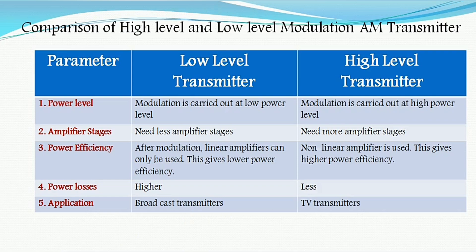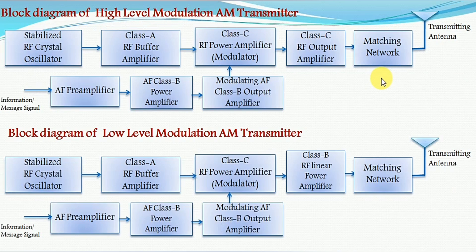In the block diagram, a matching network is used. At the output of the power amplifier, we have either a high power or low power modulated signal. The matching network is needed in order to transfer maximum power to the transmitting antenna. This matching network uses a tank circuit, and the quality factor must be kept low enough to pass all sideband signals without amplitude and frequency distortion, while at the same time providing sufficient attenuation of the second harmonic of the carrier frequency. This is the purpose of using the matching network.